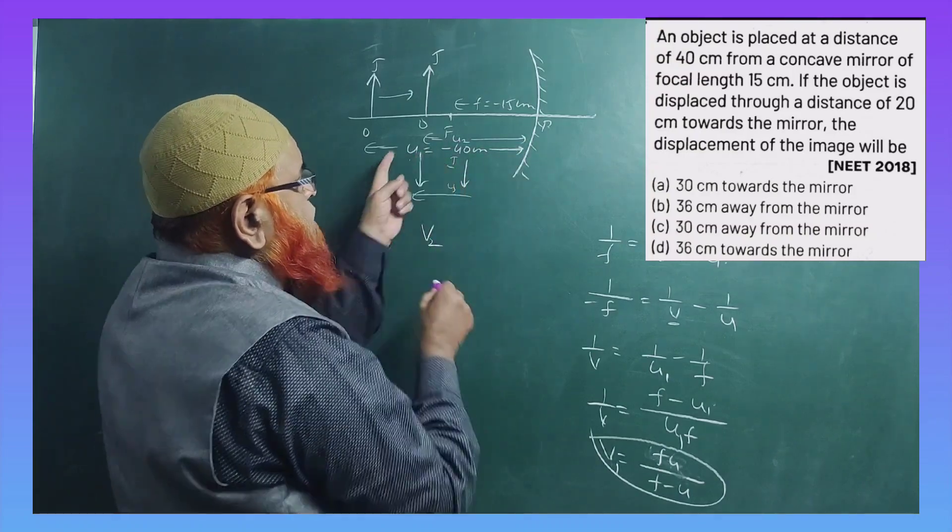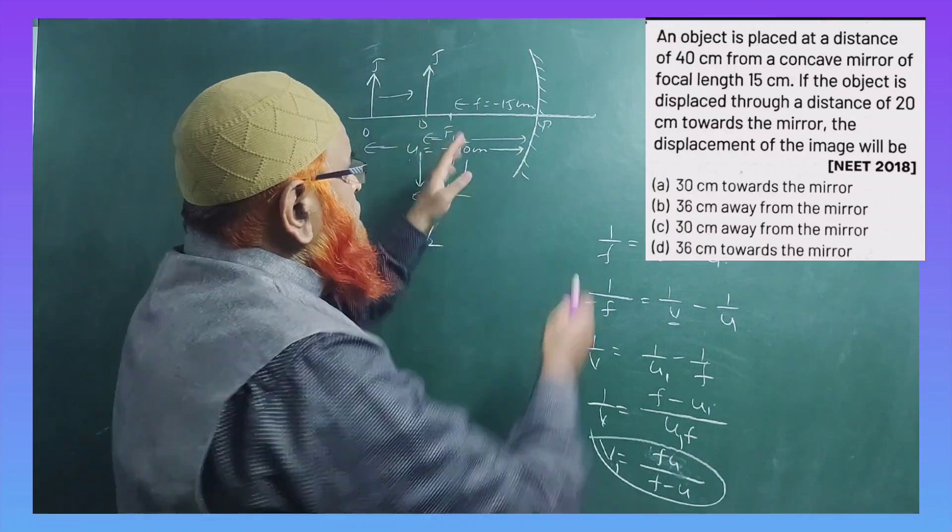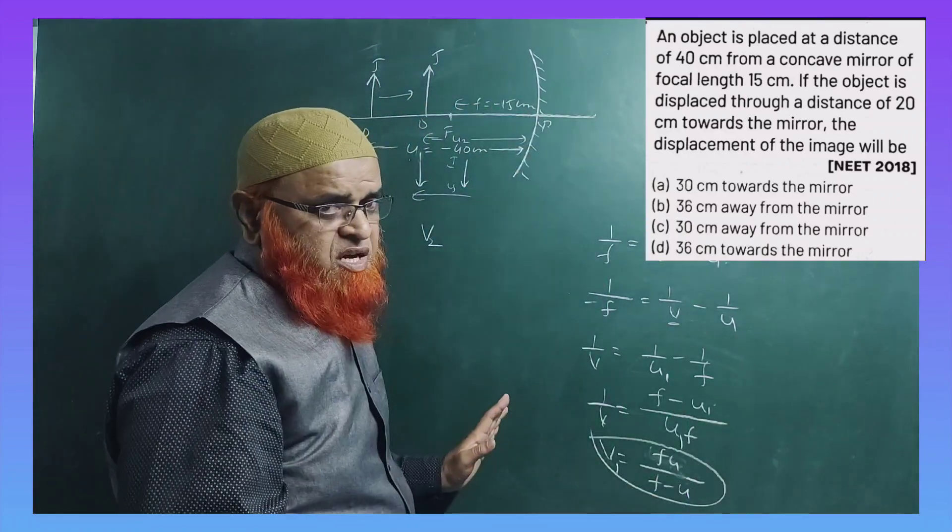This was u1. Now the object is shifted and the object distance, if you take it as u2, focal length is not going to change here.